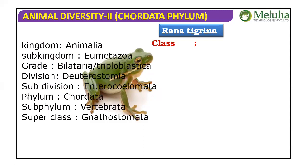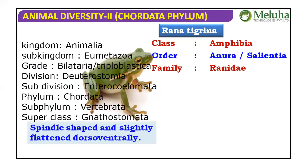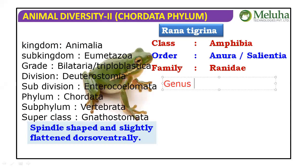Then the Class: the frog belongs to Class Amphibia. Order is Anura or Salentia. The Family is Ranidae — frogs and toads belong to Ranidae. Genus is Rana and Species is tigrina. So the complete hierarchy continues with Genus Rana and Species tigrina.